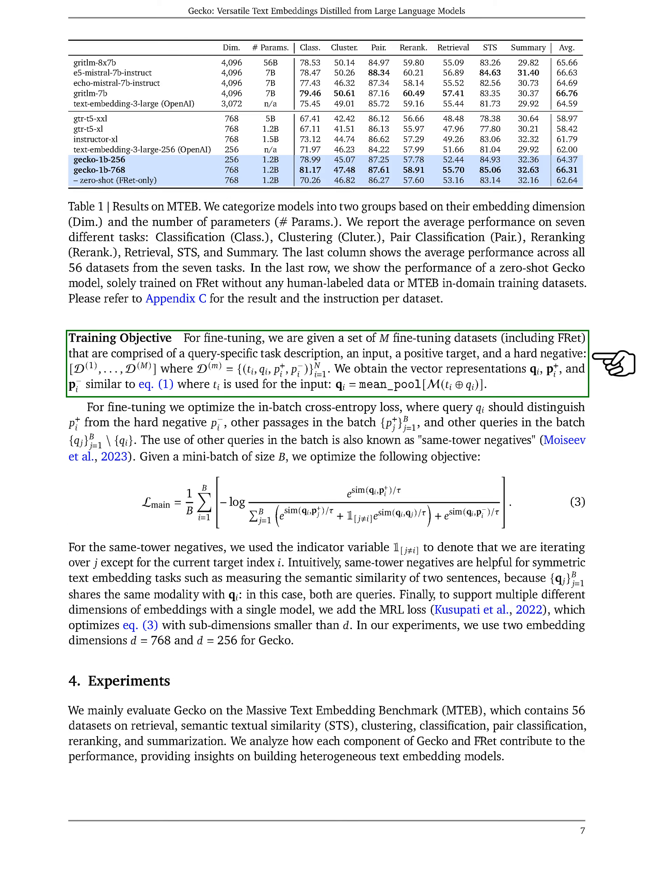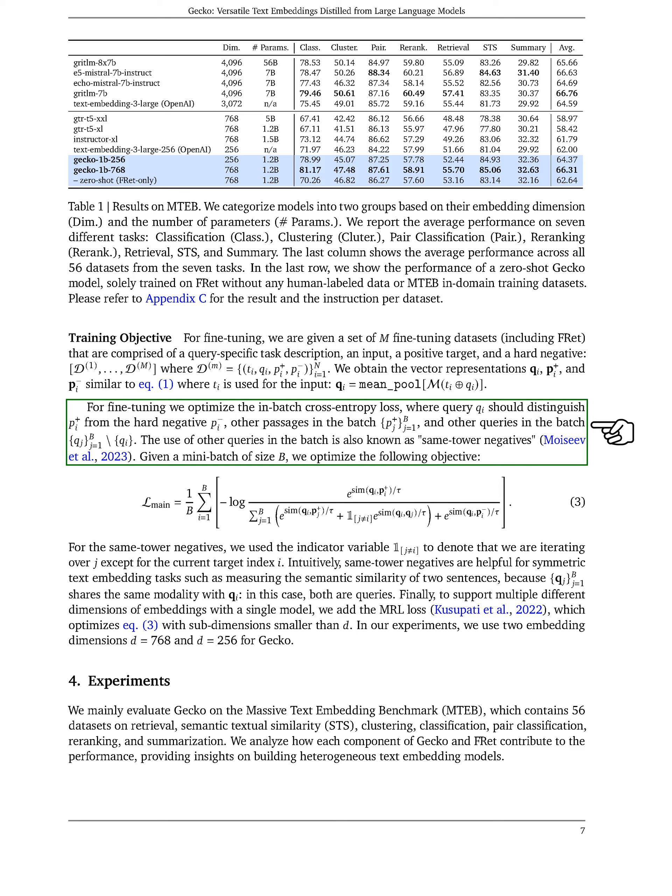We are provided with a set of 55 fine-tuning datasets, including FRET. Each dataset consists of a task description, an input, a positive target, and a hard negative. We calculate vector representations for the input, positive target, and hard negative. During fine-tuning, we aim to minimize the cross-entropy loss within the batch, where the goal is for the query to be distinguished from the hard negative and other passages in the batch.